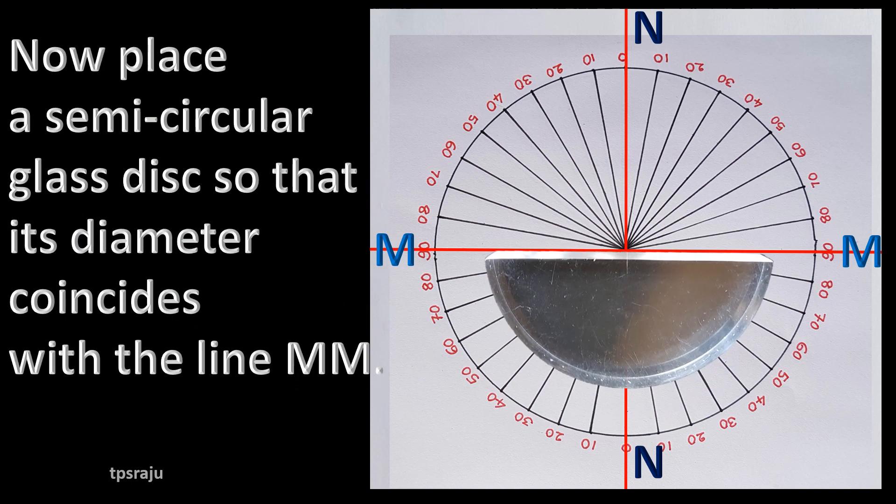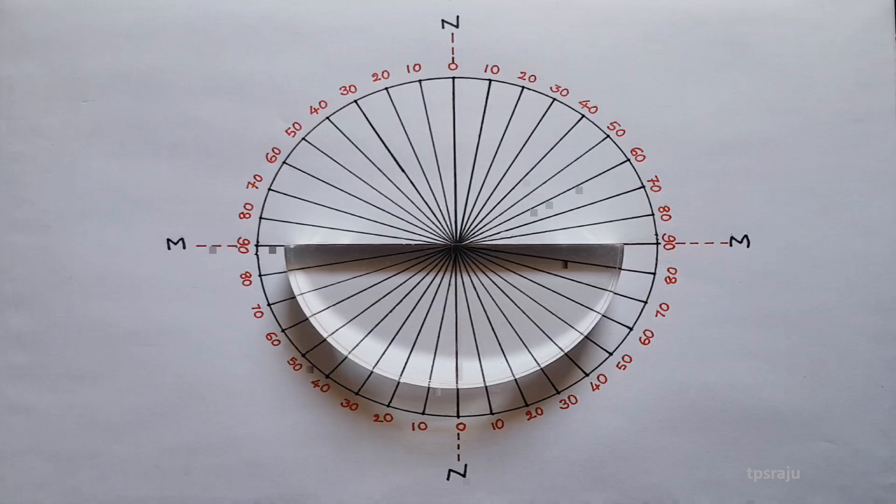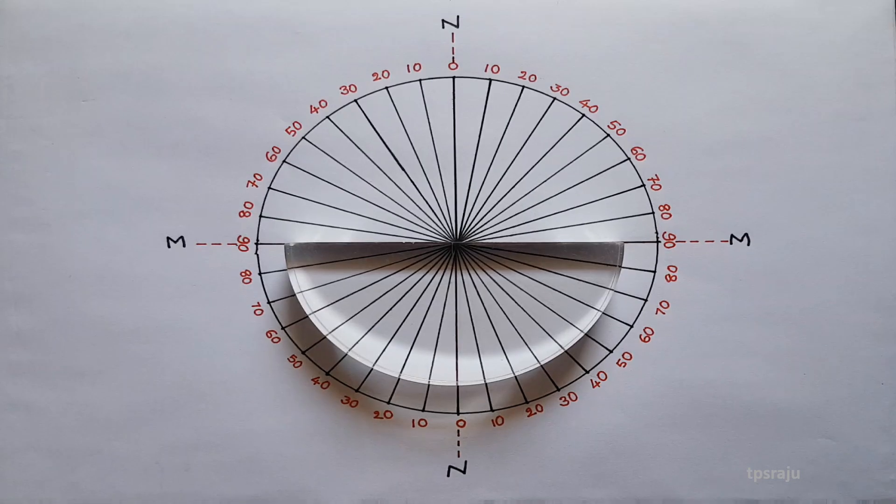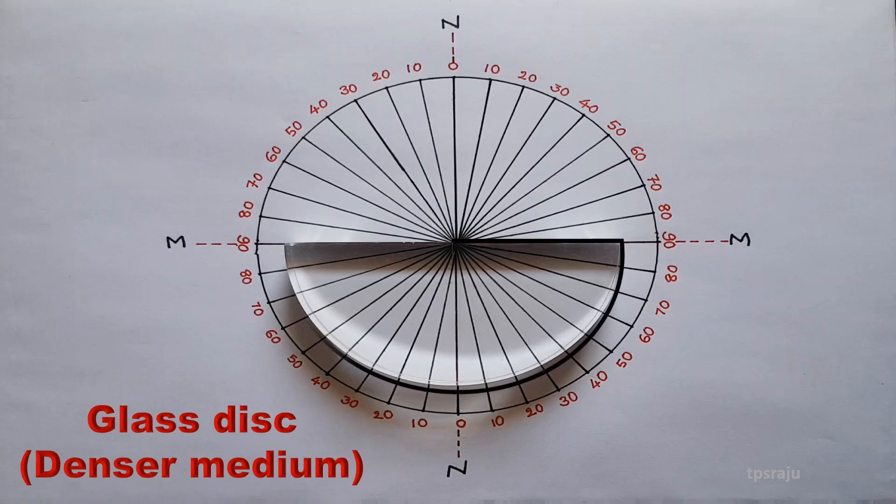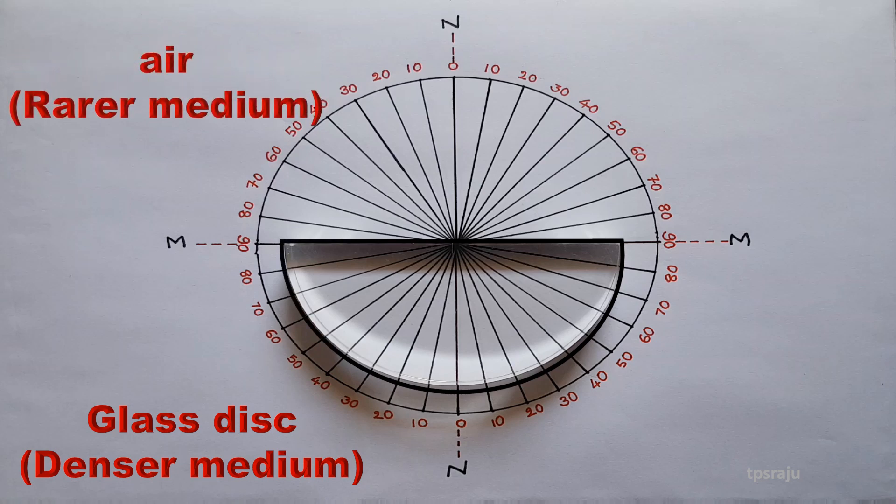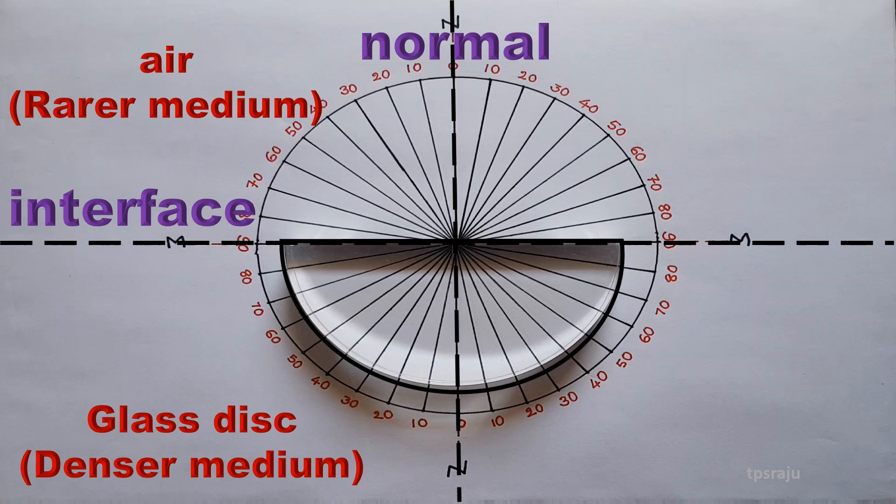Now place a semi-circular glass disc so that its diameter coincides with the line MM. Here glass disc is denser medium and air is rarer medium. The line MM is interface of the two media and the line NN is normal.